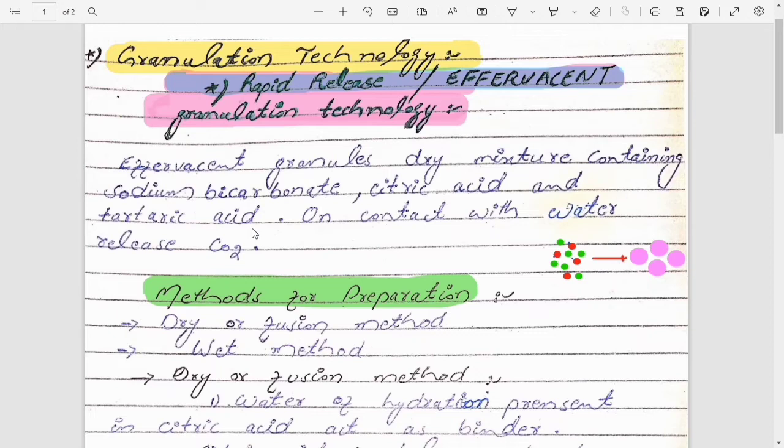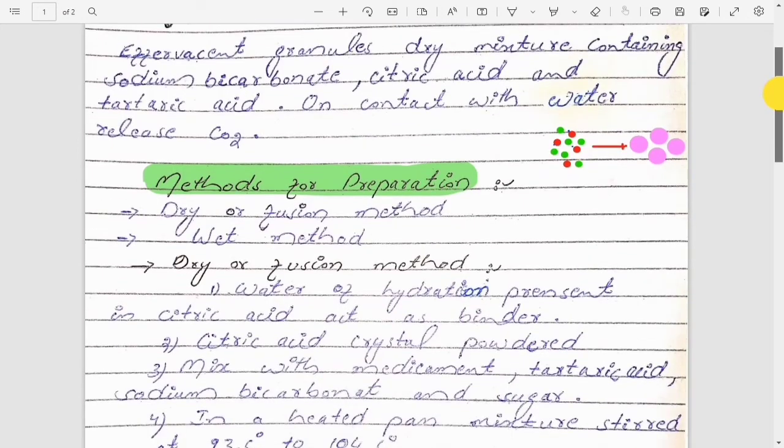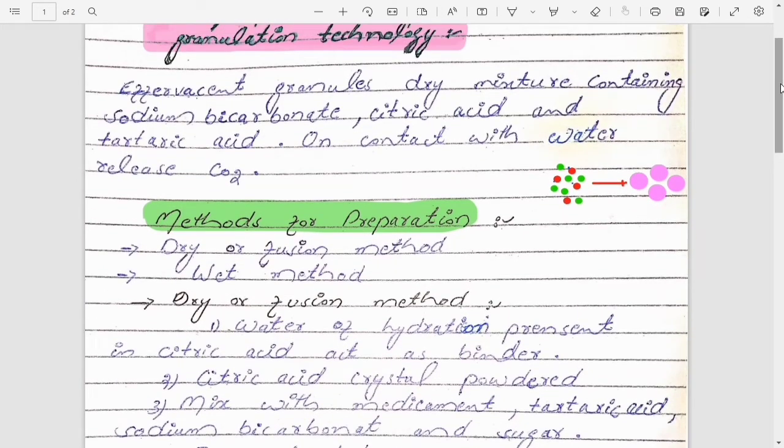Advantages of this is to get the effervescent release because these tablets or granules disintegrate too quickly due to the production of carbon dioxide. Effervescent disintegration will lead to rapid solubility of the drug, and rapid solubility will lead to rapid absorption, and rapid absorption will lead to rapid onset of action. The disadvantages of effervescent granules is that these granules